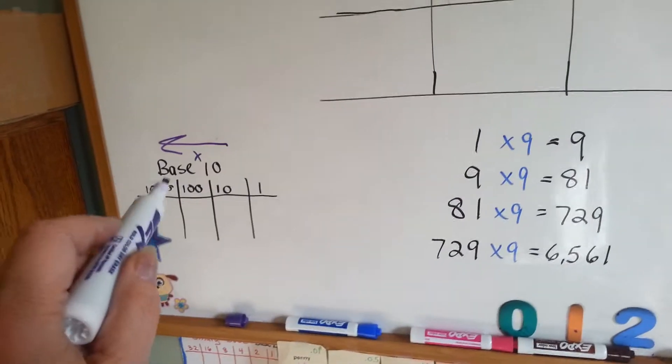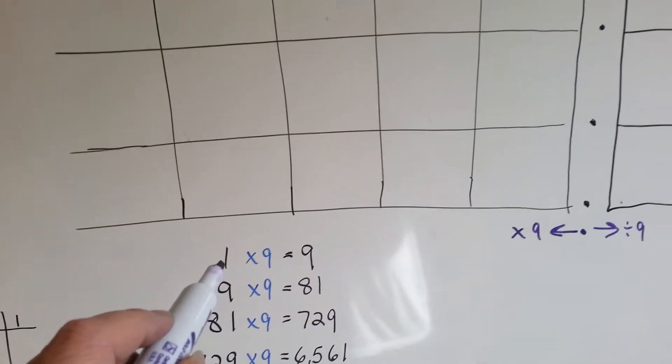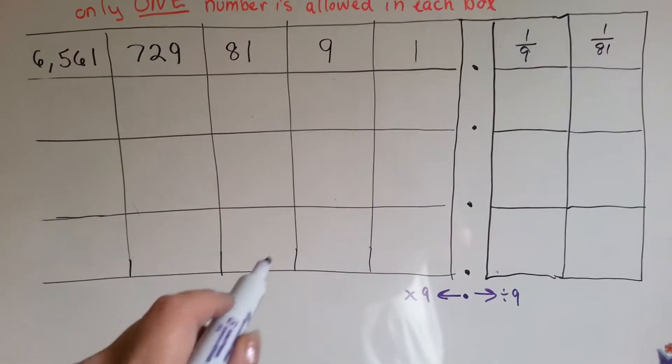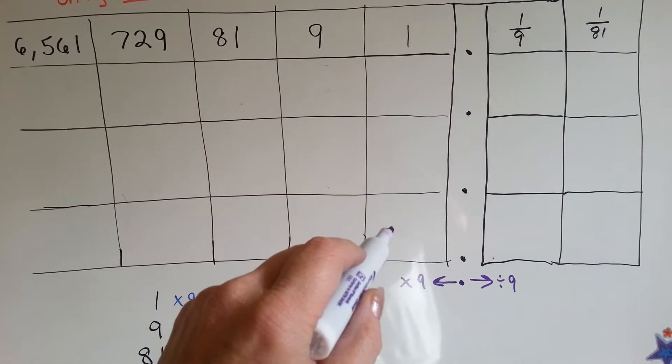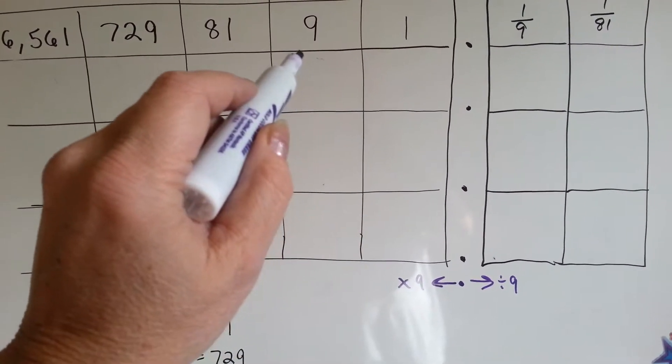So for base 9, we're going to multiply it by 9. In the ones column, you can't go bigger than 8 because the minute you hit 9, you're over here.